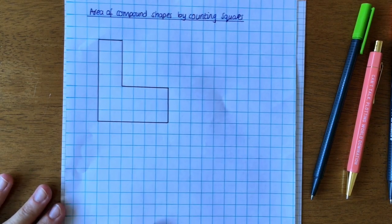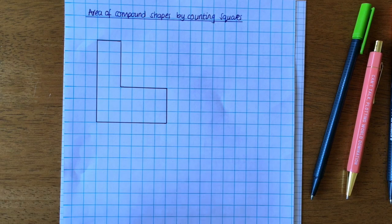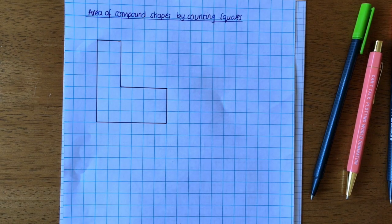But first of all, I want us to recap on how we found the area of multiple shapes together or multiple rectangles together before we do anything else.